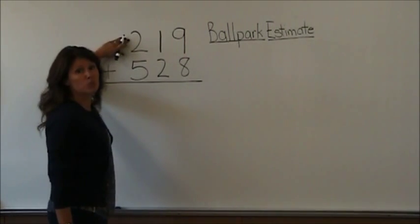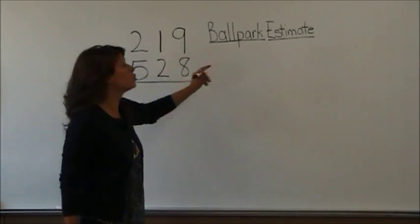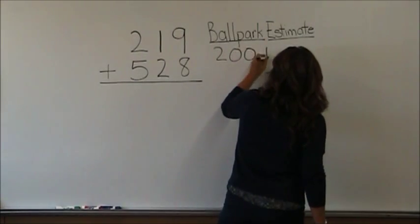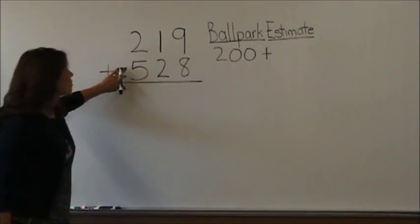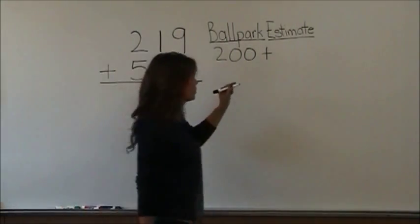If I'm estimating the number two hundred and nineteen, I'm going to put two hundred. If I'm giving an estimate of five hundred and twenty-eight, I'm going to put five hundred.